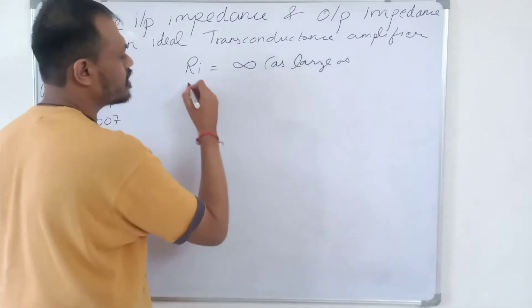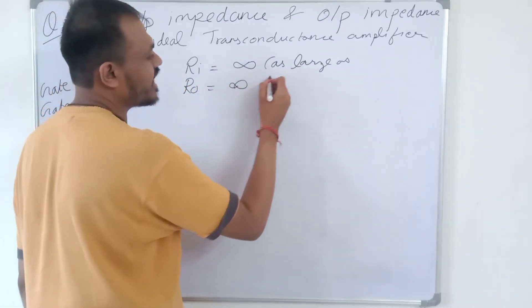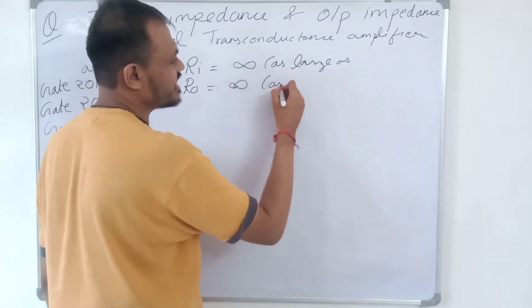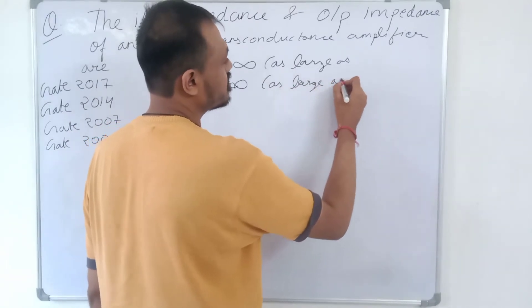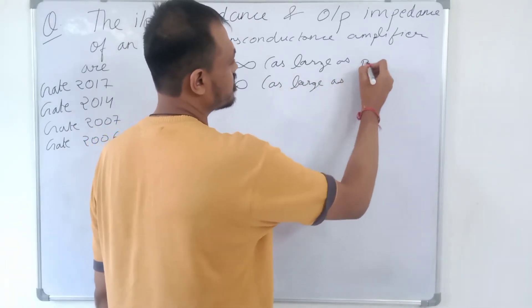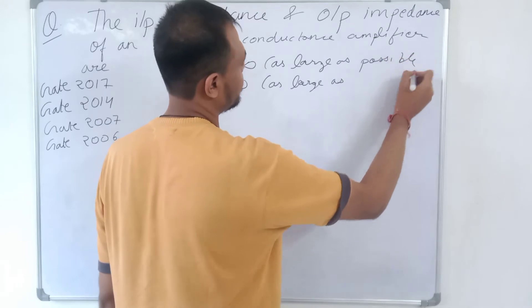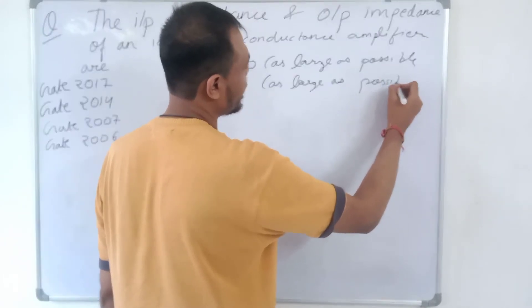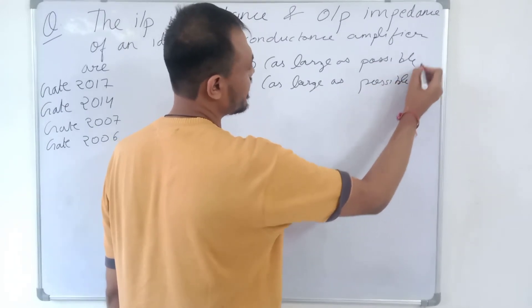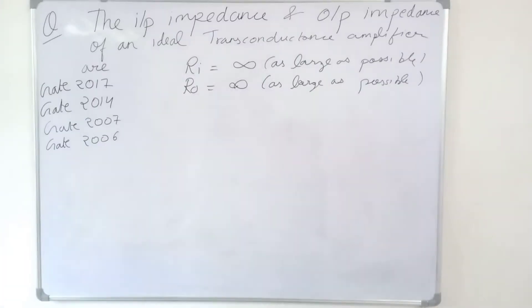The output impedance should also be infinite, or as large as possible. These are the ideal characteristics of a Transconductance Amplifier — both input and output impedance should be ideally infinite or as large as possible.